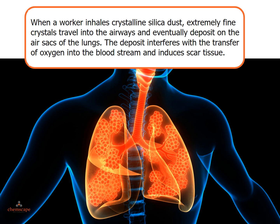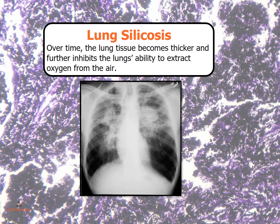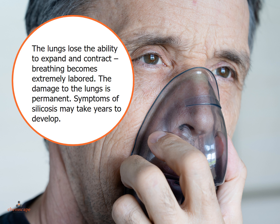When a worker inhales crystalline silica dust, extremely fine crystals travel into the airways and eventually deposit on the air sacs of the lungs. The deposit interferes with the transfer of oxygen into the bloodstream and induces scar tissue. Over time, the lung tissue becomes thicker and further inhibits the lungs' ability to extract oxygen from the air. The lungs lose the ability to expand and contract, and breathing becomes extremely labored. The damage to the lungs is permanent.